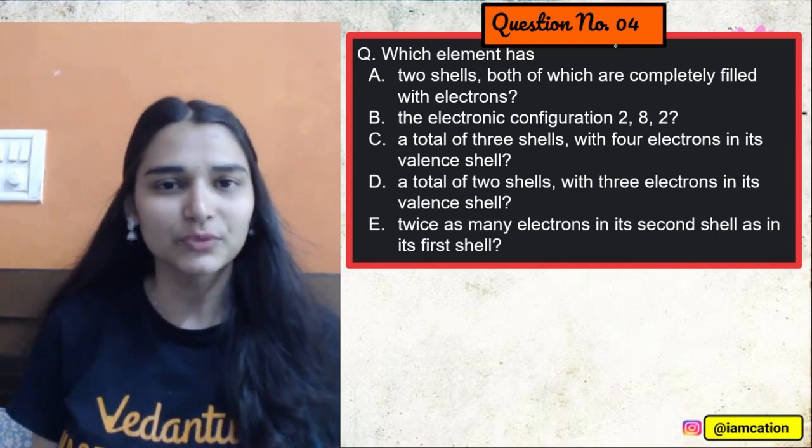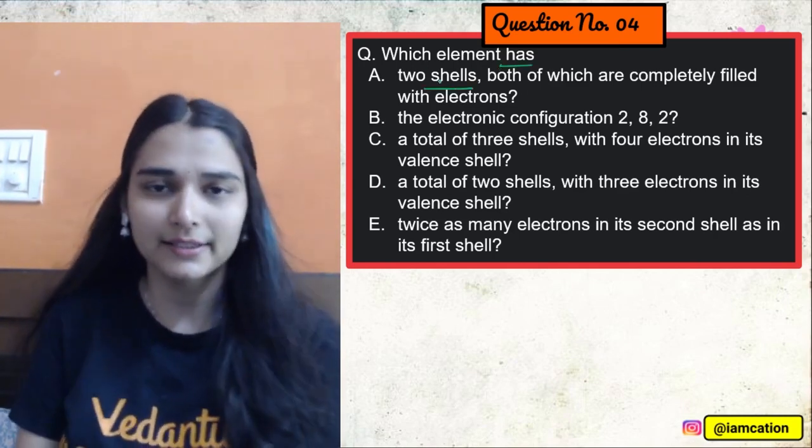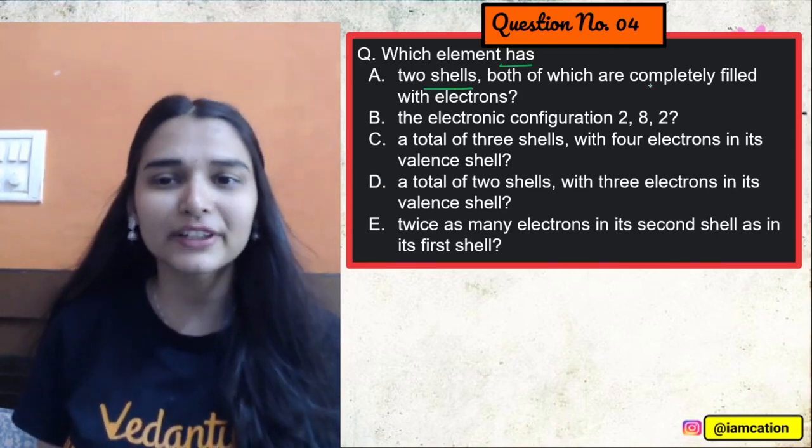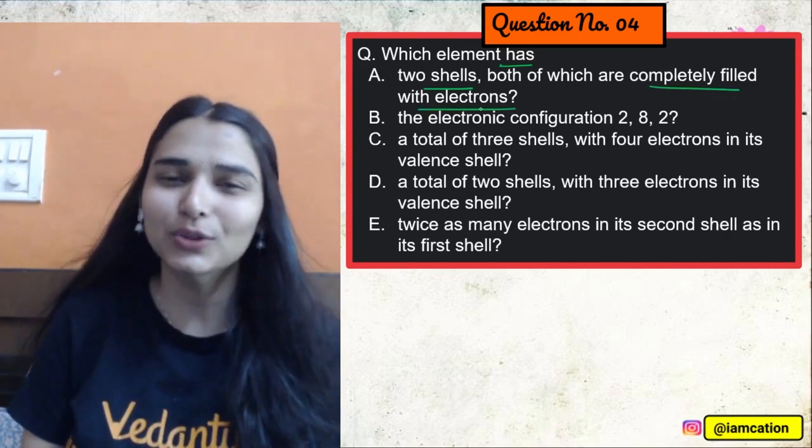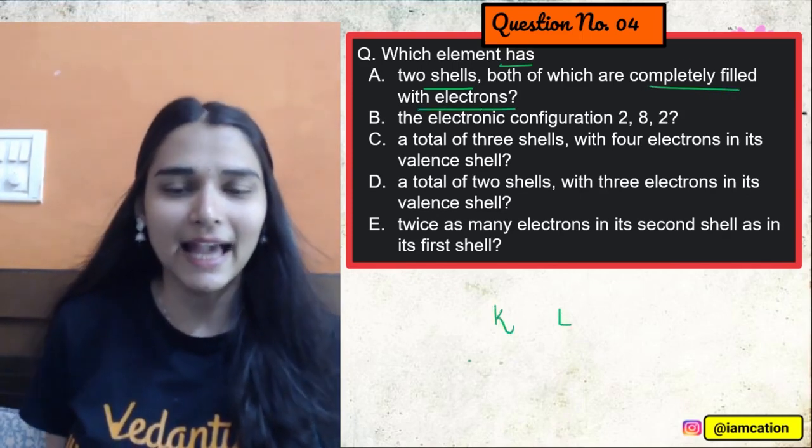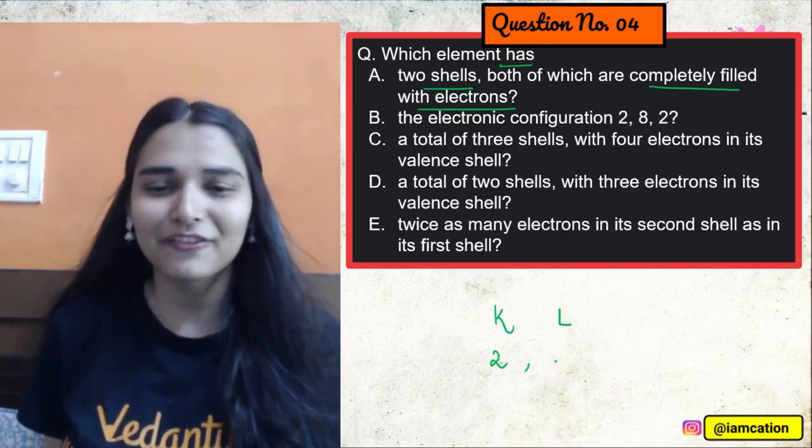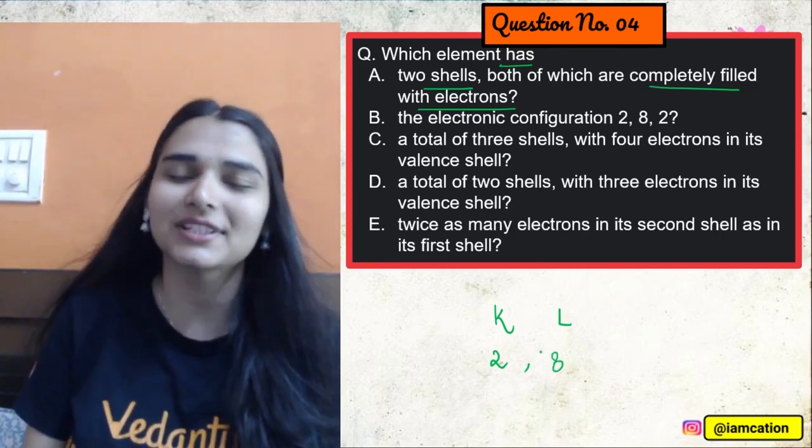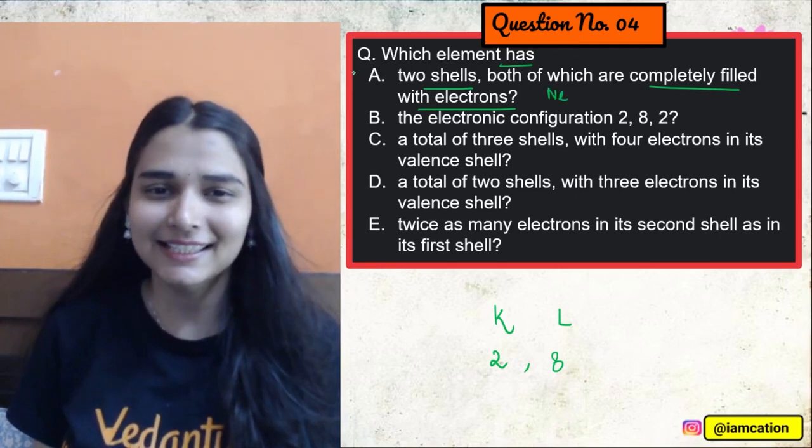The fourth question has some sub-parts. Easier one. Which element has two shells, both of which are completely filled with electrons? Two shells, both completely filled with electrons. K and L. K has maximum capacity of 2, L can have a maximum capacity of 8. So this is the configuration. Tell me, what is this element? Neon. Yes, easy.